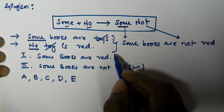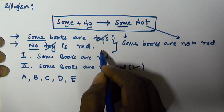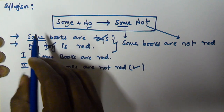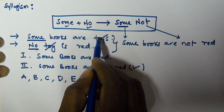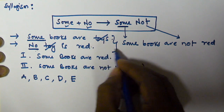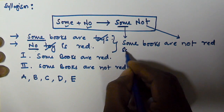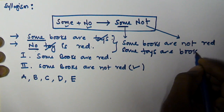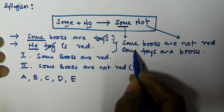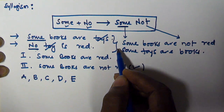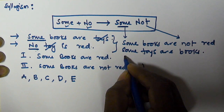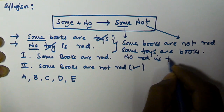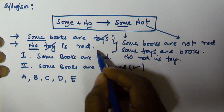We can also derive additional statements. When 'some books are toys,' we can write 'some toys are also books' — this is derived from the first statement alone. Similarly, if 'no toy is red,' then 'no red is toy' — this is derived from the second statement alone.